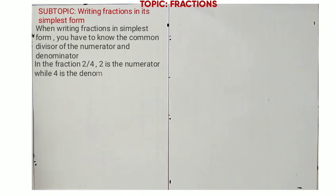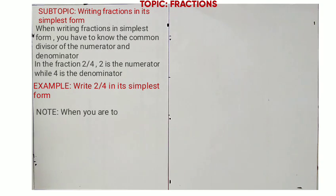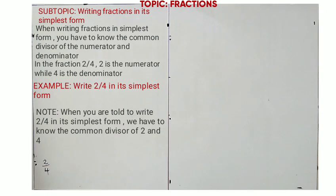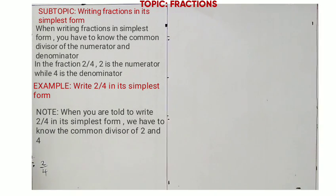Let us look at the first example. Write 2/4 in its simplest form. When you are told to write 2/4 in its simplest form, we have to know the common divisors of 2 and 4. The common divisor of 2 and 4 is 2. Therefore, to write it in simplest form, we divide both 2 and 4 by 2.